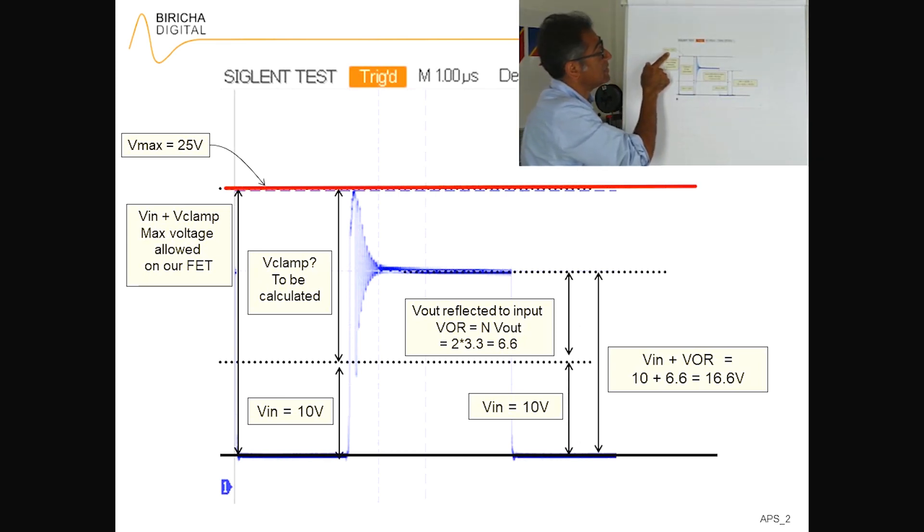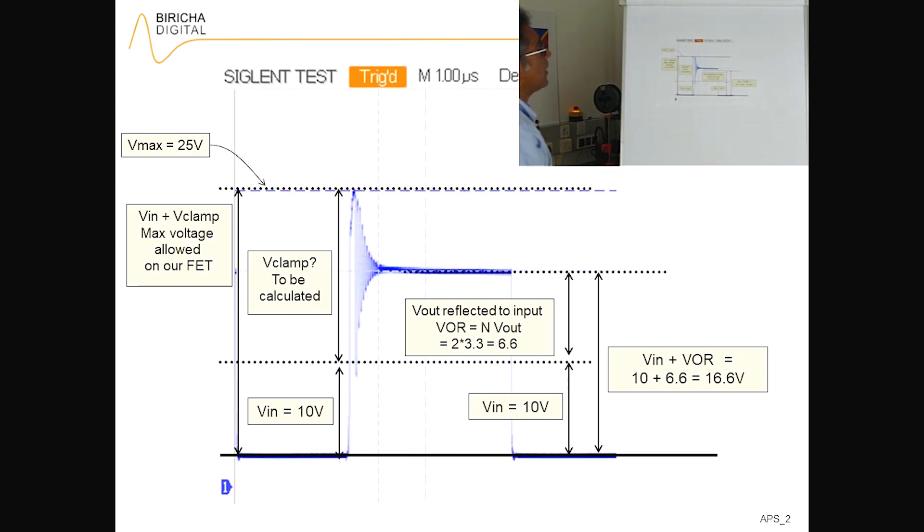Without the RCD clamp, this would go up here and start ringing and could damage the MOSFET. So the things that we need to calculate is basically based on the information that we know. You've got an input voltage. For simplicity, let's say the input voltage of the power supply is 10 volts.